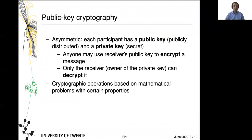What are we talking about? As I mentioned, public key cryptography, which is also called asymmetric cryptography, is based on mathematical problems that we believe to have certain properties. The difference to symmetric cryptography is in the keys. In symmetric cryptography, every participant has a key that they can share with someone else, and with that person or entity they can communicate securely. In public key cryptography, each participant has two keys: a public key and a private key.